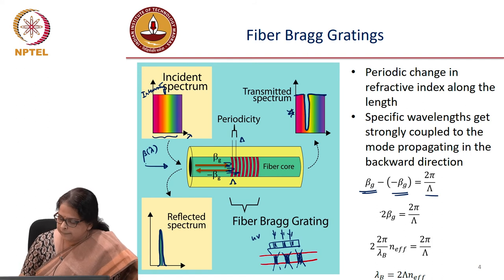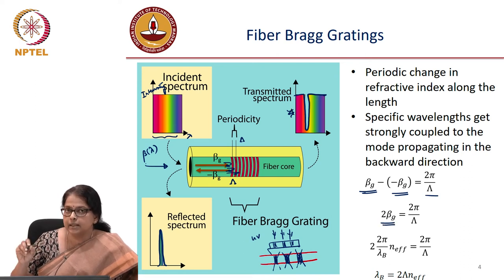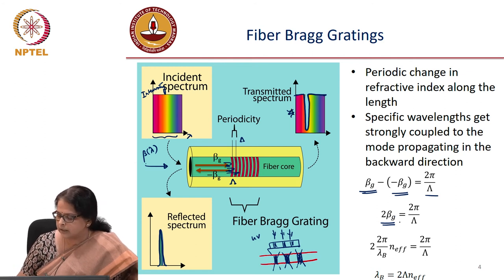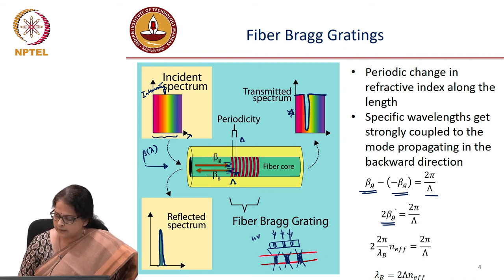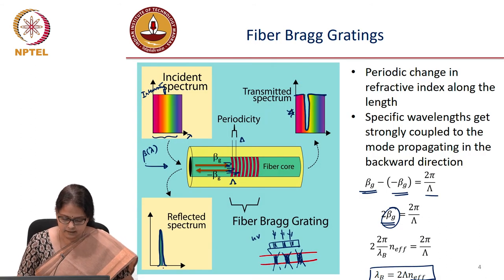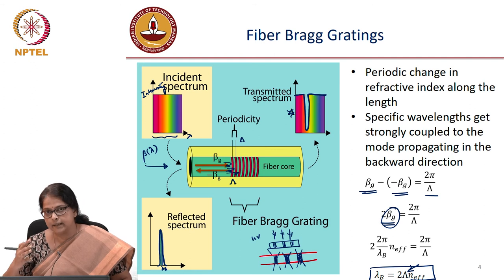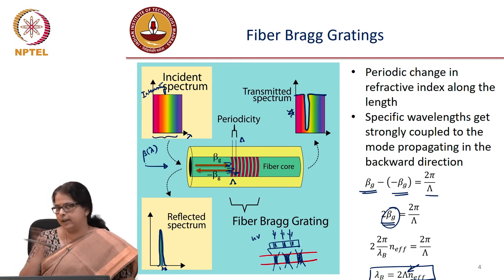This phase matching condition gives a specific condition for the beta corresponding to the reflected wave: 2β_g = 2π/Λ, where Λ is the periodicity of the grating. Expanding β_g as 2π divided by lambda times the effective index gives the Bragg wavelength λ_B that gets reflected from the grating. By writing the grating with different periodicities, you can design a fiber Bragg grating that reflects light of any wavelength.